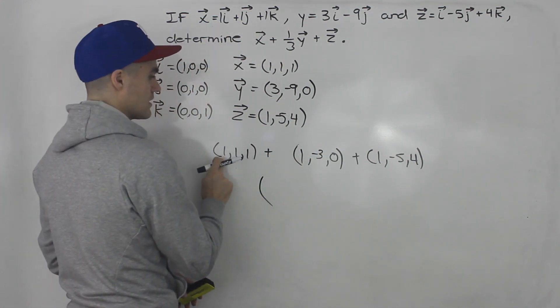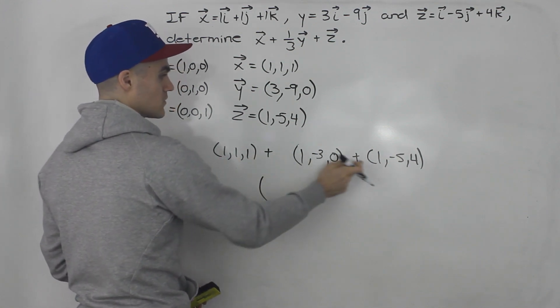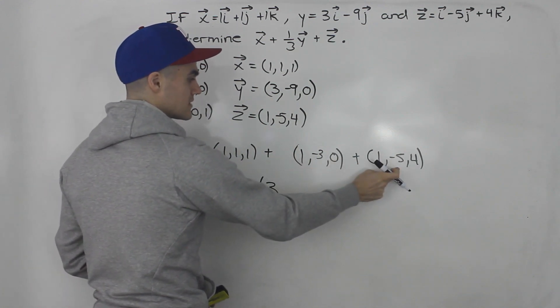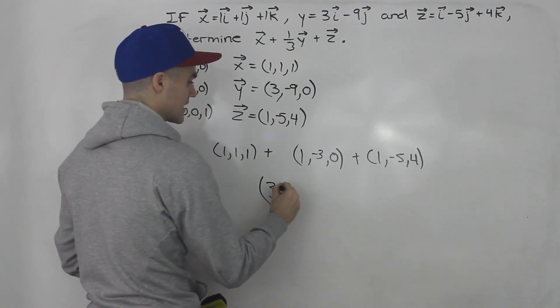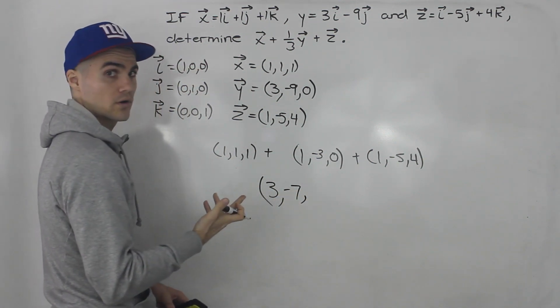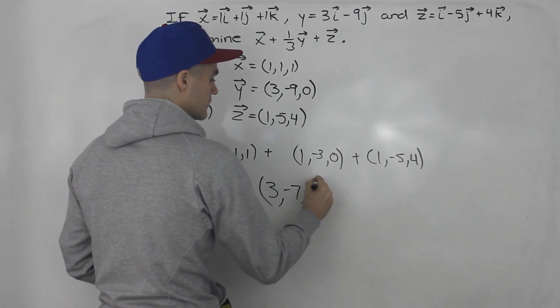And now all we have to do is add up all of the x values. So 1 plus 1 plus 1, that is 3. 1 minus 3 minus 5. So 1 minus 3 is negative 2 minus 5 is negative 7. And then the z coordinates, 1 plus 0 plus 4, that would give us 5.